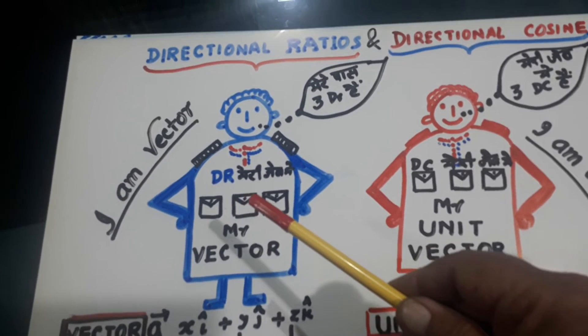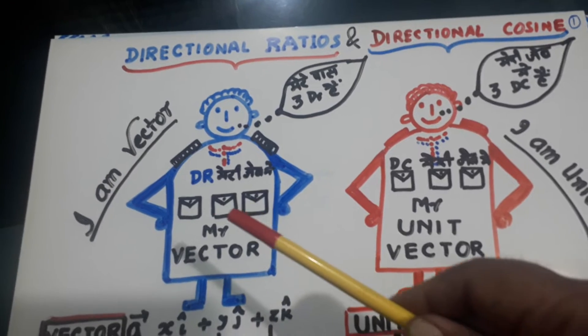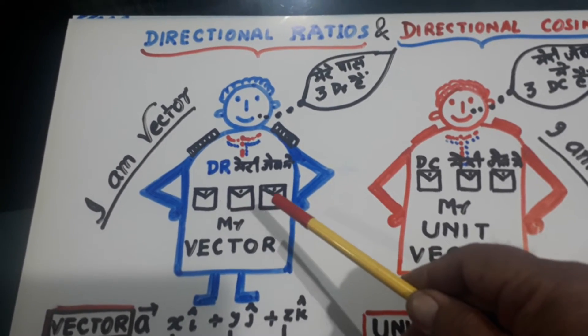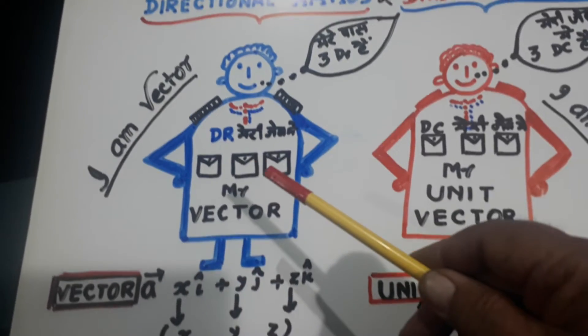DR, directional ratios. The three components in the vector are called directional ratios.